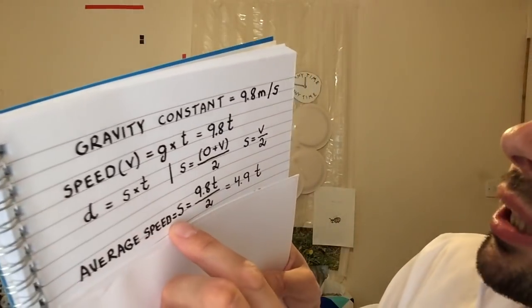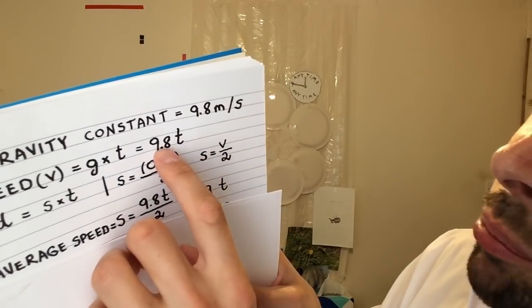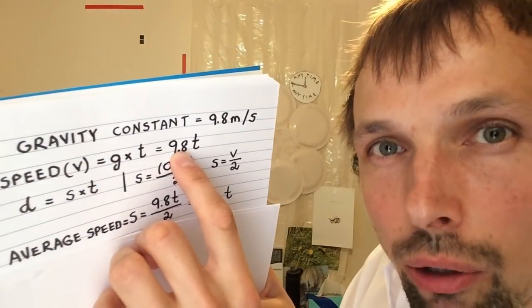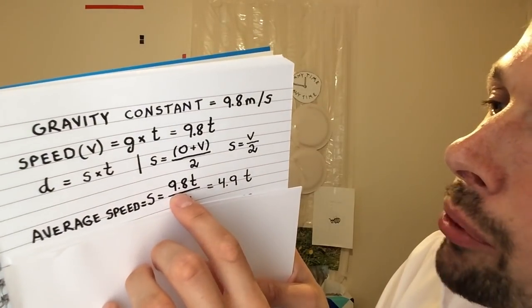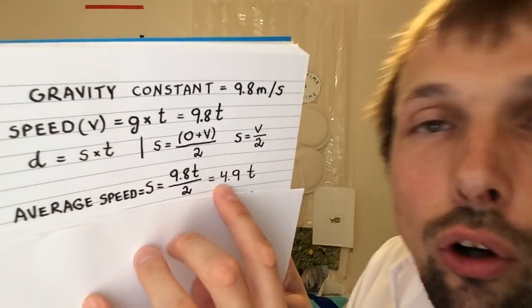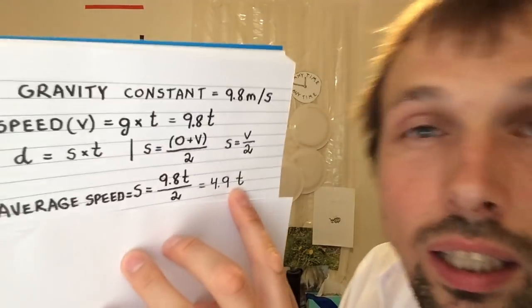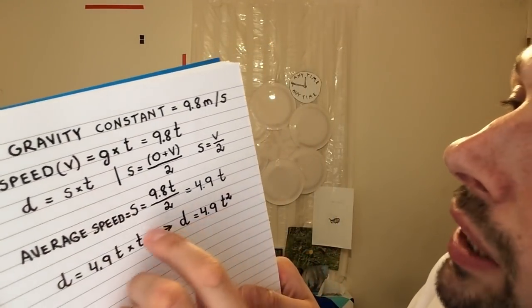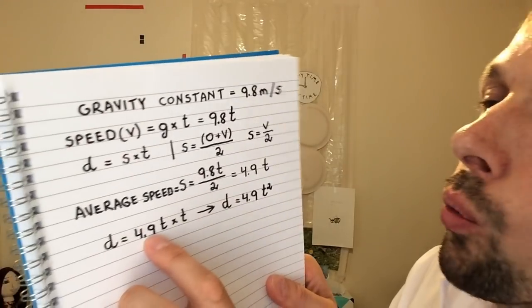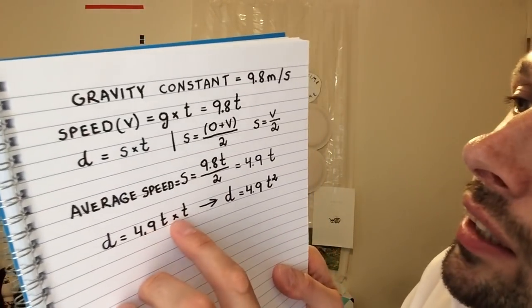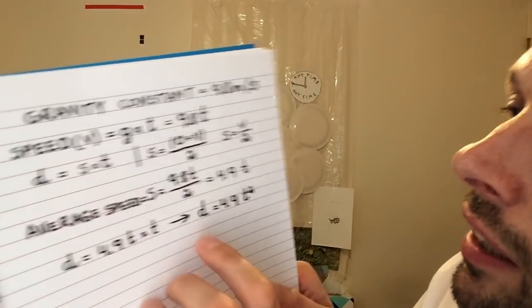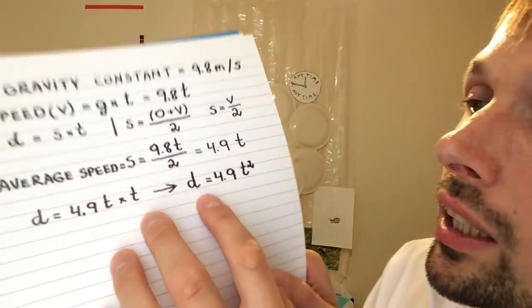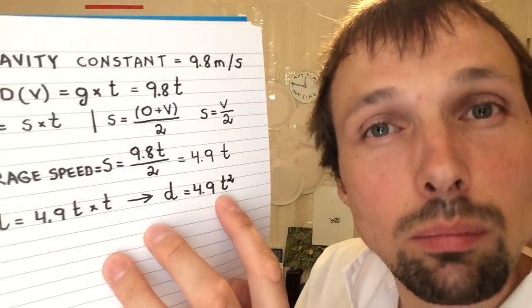To calculate the average speed, we replace V with 9.8T, giving us 9.8T divided by 2, which is 4.9 times T. Now substituting into D equals S times T, we replace S with 4.9T and multiply by T again. So the final formula is: distance equals 4.9 times T squared.